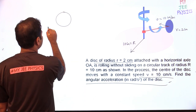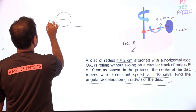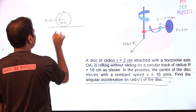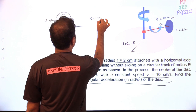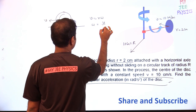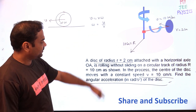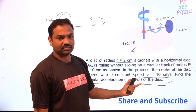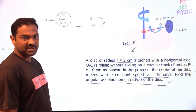The disc is rolling without slipping on the ground, so it has velocity V. It will rotate with some angular velocity omega. We can write V = R·omega, so omega = V/R. That gives us omega = 10/2 = 5 radians per second.